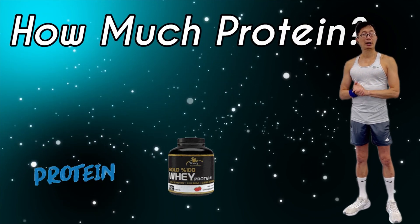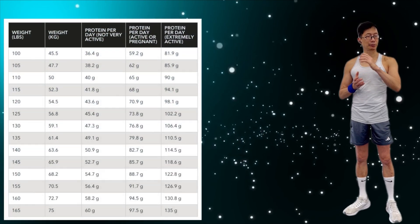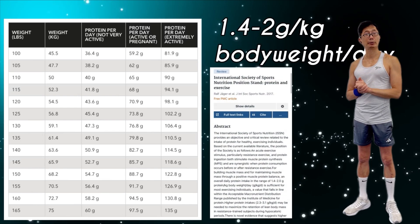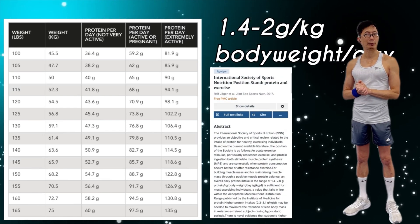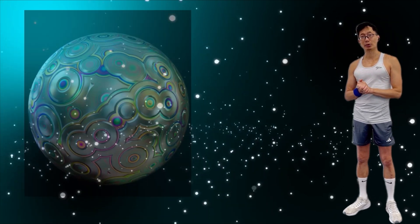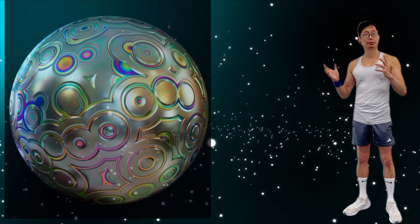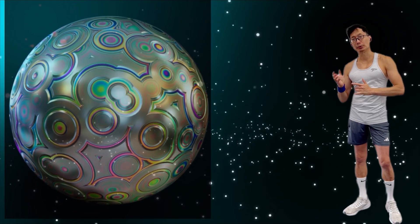And the next question is, how much protein do you need? It is different for everyone, obviously, but 1.4 to 2 grams of protein per kilogram of body weight per day is a good place to start. Hitting these targets will get you all the essential amino acids you need to build muscle.